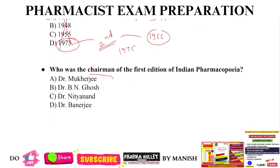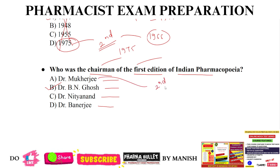Who was the chairman of the first edition of Indian Pharmacopeia? Options: Dr. Mukherjee, Dr. B.N. Ghosh, Dr. Nithyanand, or Dr. Banerjee? The correct answer is Dr. B.N. Ghosh, option B. Dr. B.N. Ghosh was the chairman of first IP. Dr. Mukherjee was the chairman of the second edition of IP. Then the chairman of the third edition of IP was Dr. Nithyanand.